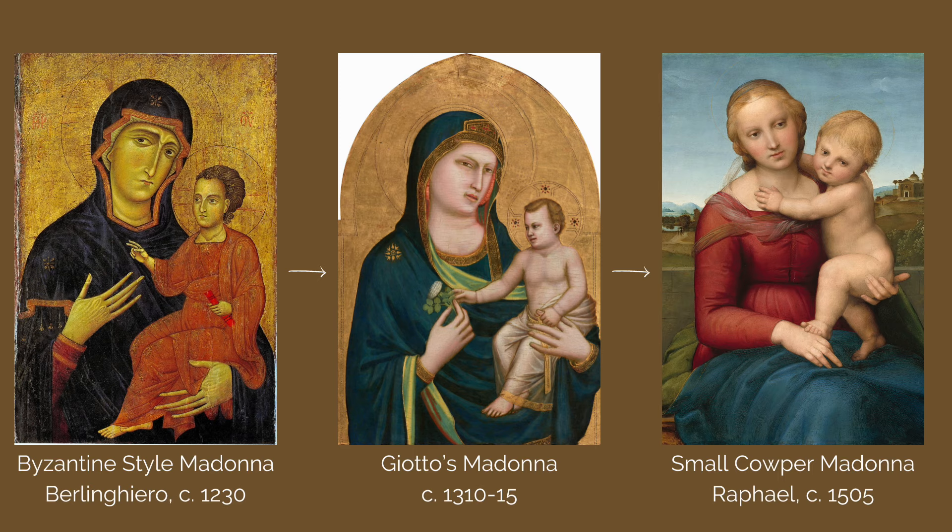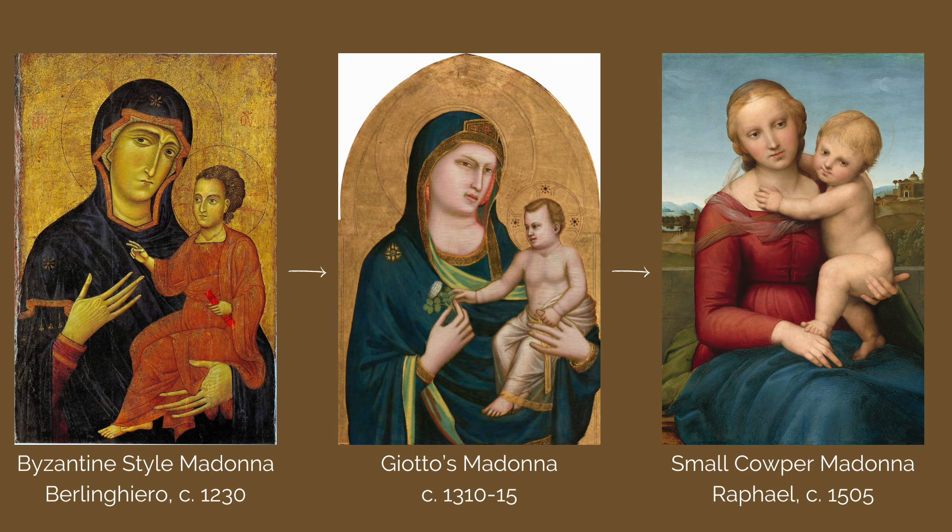Secondly, we can see that both of the figures' bodies underneath their robes give them a sense of weight and naturalism. On the surface, this work may seem like a simple image of the Madonna and Child. However, its details show us how Giotto and his art permanently shaped the trajectory of art in the Western world.